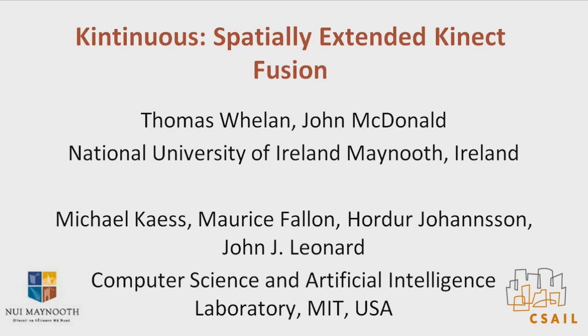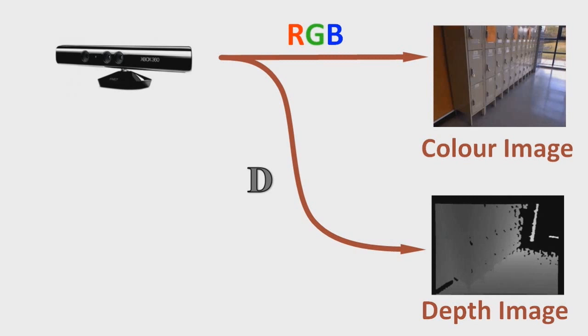In this video we introduce Continuous, a system for building accurate 3D models of an environment using consumer level RGBD cameras. RGBD cameras get their name from the fact that they output images where each pixel stores both the color and the depth from the corresponding point in the scene to the camera.